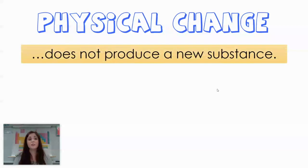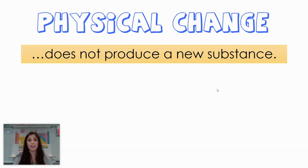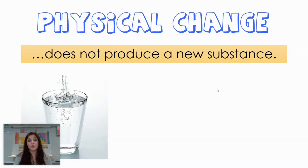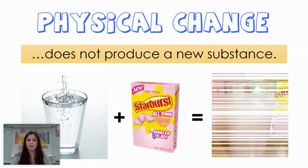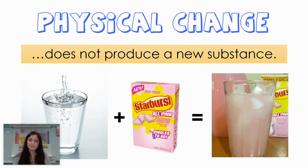The first type of change is called a physical change. A physical change does not produce something that is totally new. I have two or more different things, and I put them together or change them in some way, but I didn't make anything entirely new. For example, the drink mix situation: I have a glass of water and some of those Starburst little drink mixes — it's like a concentrated sugar. I put the sugar in the water, and what do I get? Basically sugar water. This is an example of a physical change.